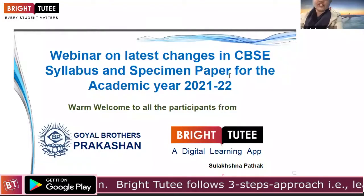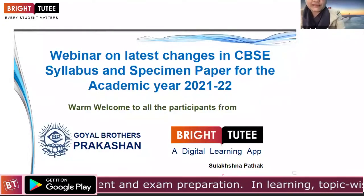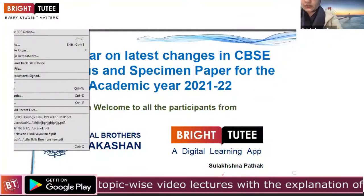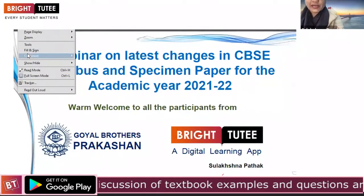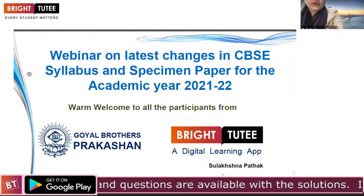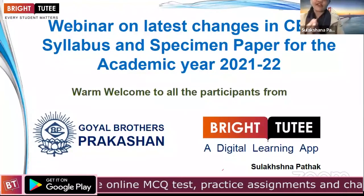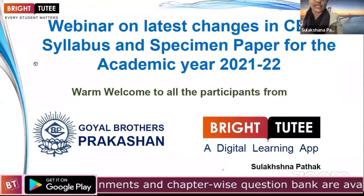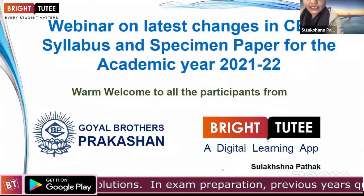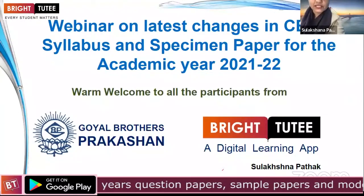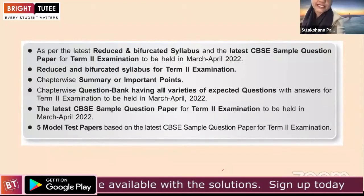Thank you to all participants for joining this webinar. In this webinar, we will discuss the biology syllabus for Term 2, that is March 2022. We will discuss the reduced and bifurcated syllabus for the academic year 2021-22. In biology, we have five major units — Units 6 and 7 were covered in Term 1, and in Term 2 we have three units: Unit 8, Unit 9, and Unit 10.